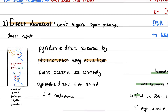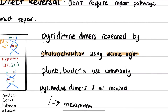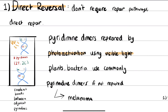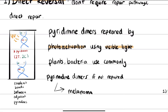The pyrimidines bond with each other instead of their complementary nucleotide, which messes up the double strand. Visible light causes photoactivation to reverse this, and plants and bacteria commonly use this to repair. If this is not repaired, it can cause melanoma.